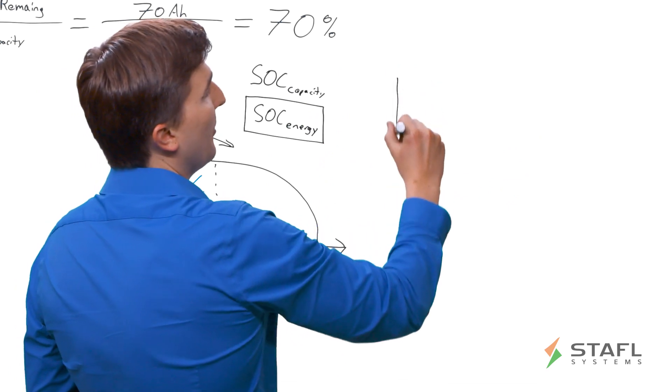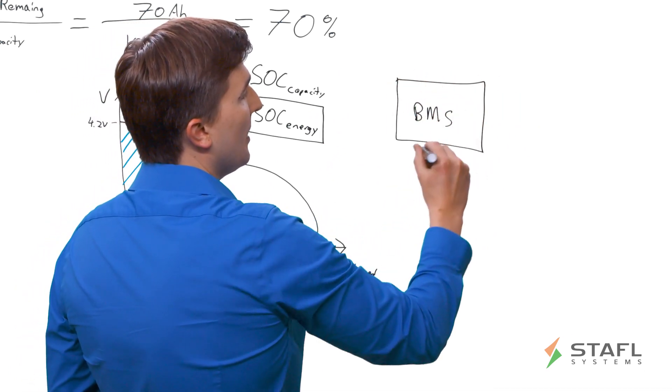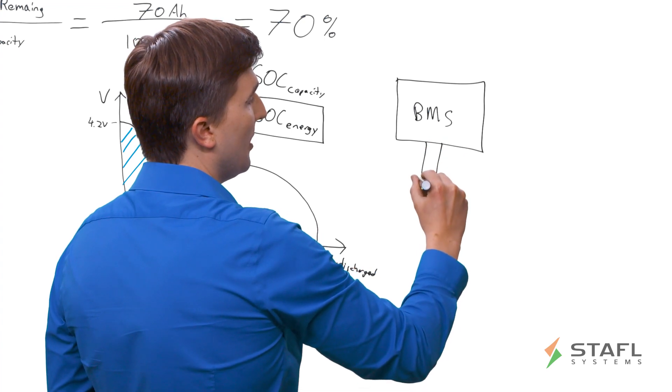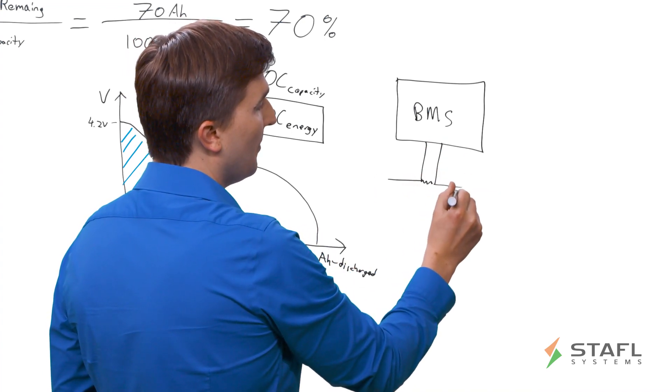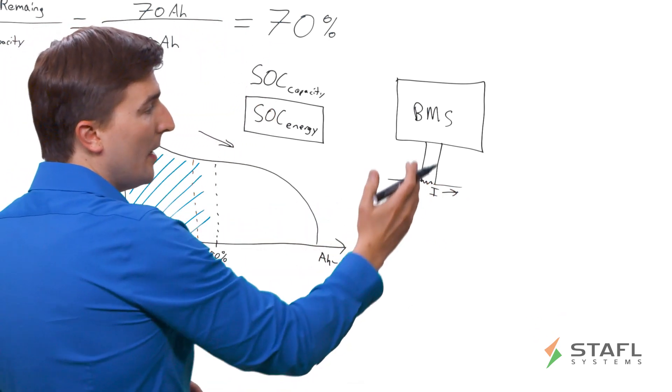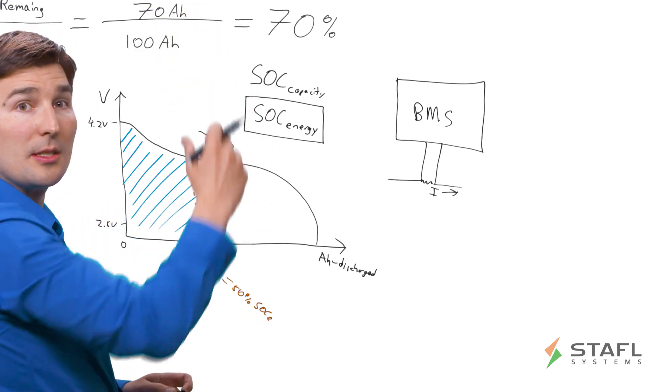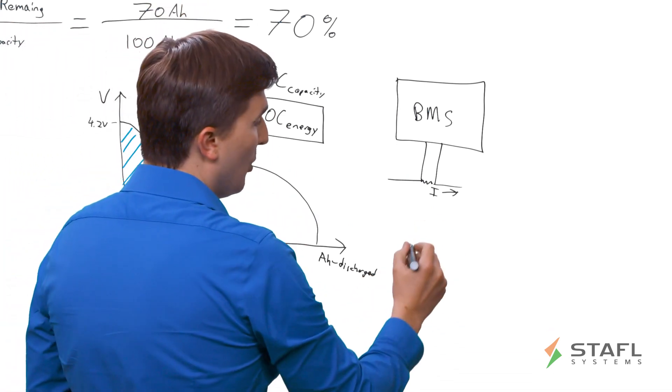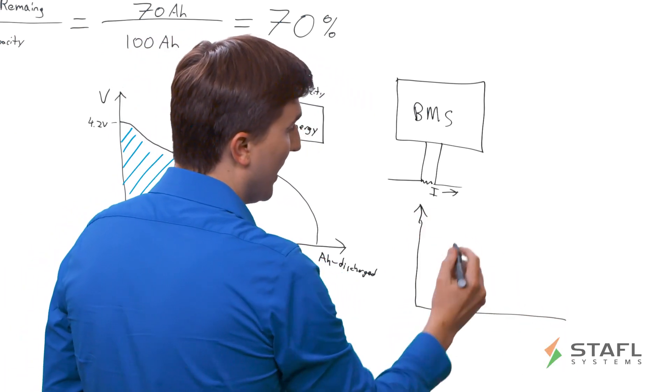From the first video, we can remember that a BMS typically has a current sensor, either a shunt or a Hall effect device, that can monitor the current flowing in or out of the battery pack. And what are you doing to determine amp hours? Since amp hours are in units of current times time, we are actually performing an integration called Coulomb counting.